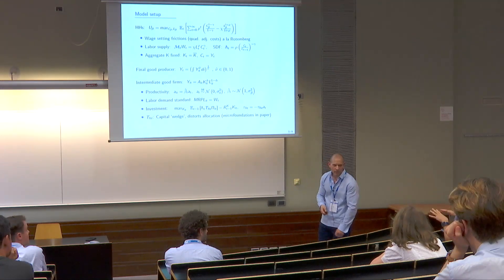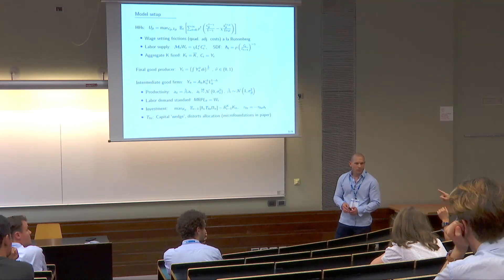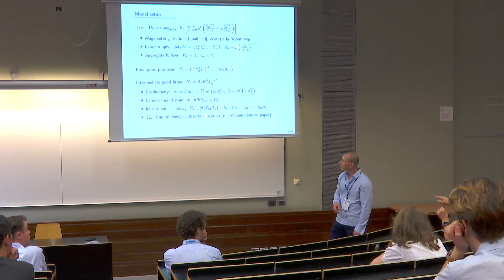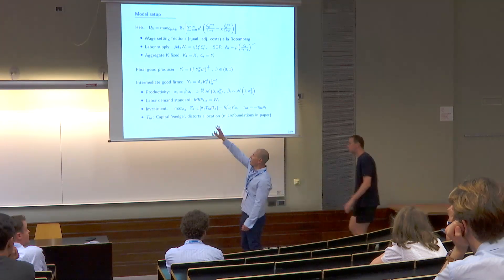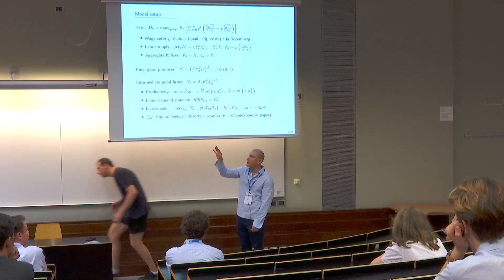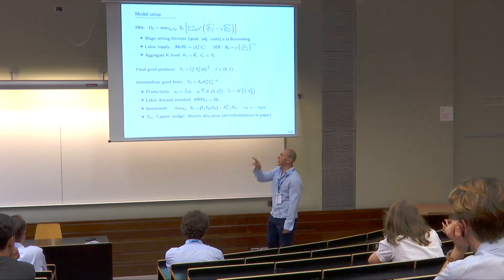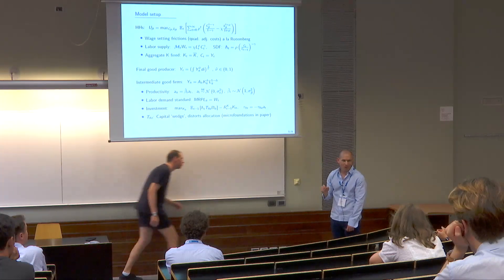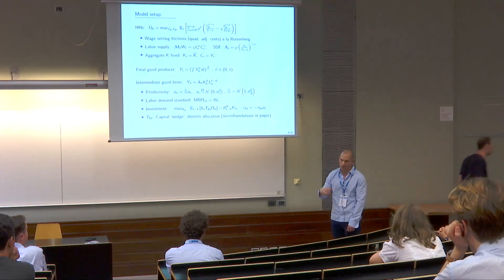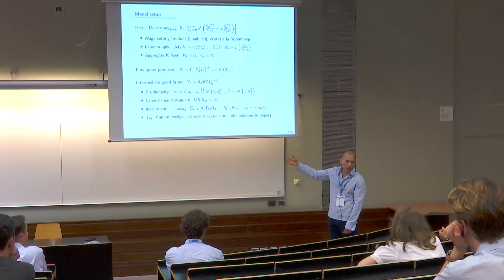Another question: where's the source of distortion — from the productivity betas or from the wedge? The betas are efficient in this model. The distortion is T lambda. There's also a second distortion from sticky wages. So the model has two distortions: one from nominal rigidity and one from capital market frictions. That's important because monetary policy has only one instrument — the nominal interest rate.